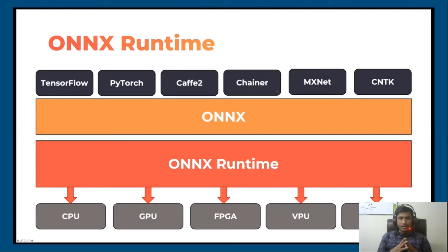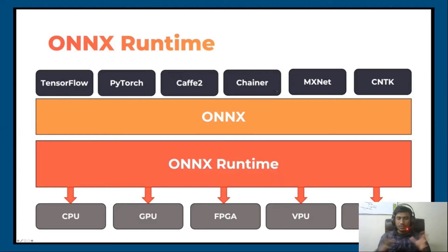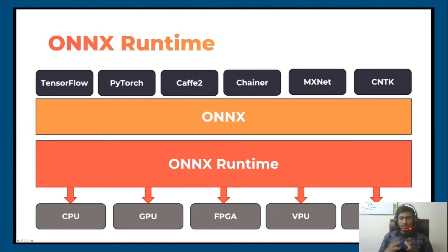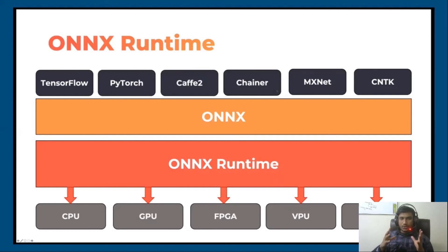After converting your model to ONNX, you use the ONNX Runtime, and from the ONNX Runtime itself it can communicate to the CPU, GPU, or whatever hardware you have. It just tries to make everything communicate with each other. So you don't have to worry about your hardware or your framework — once you have converted your model to ONNX file format, it will handle everything by default.